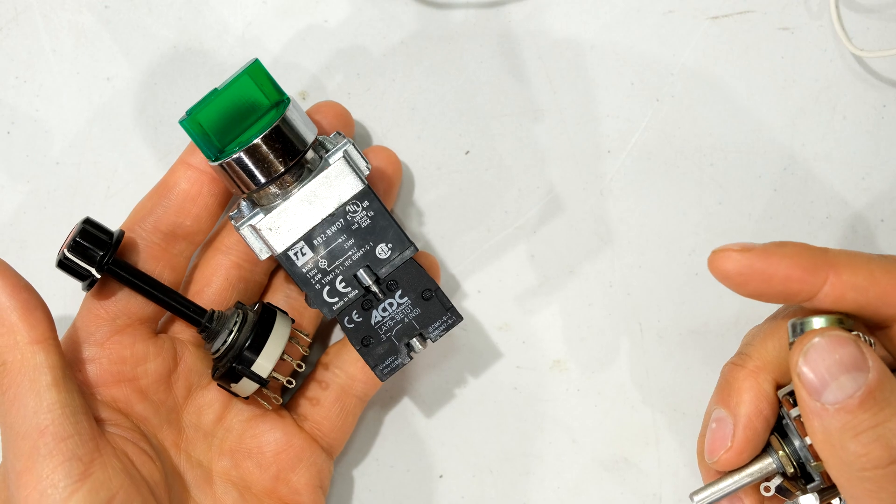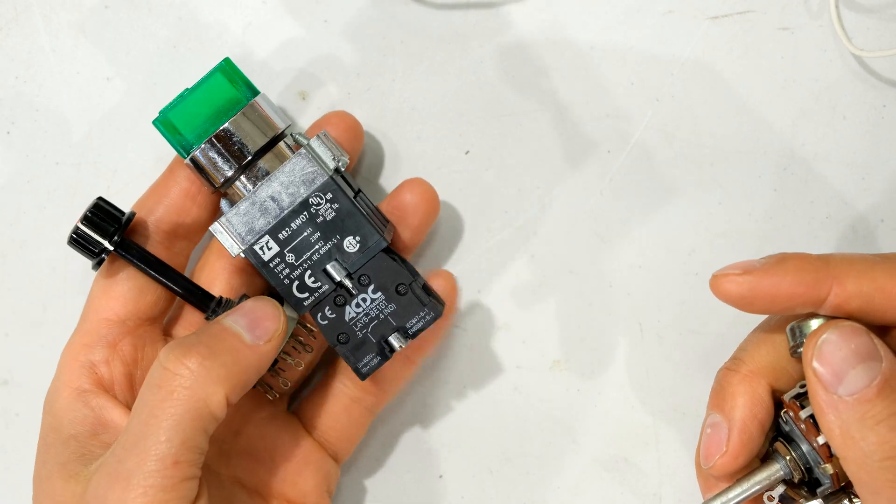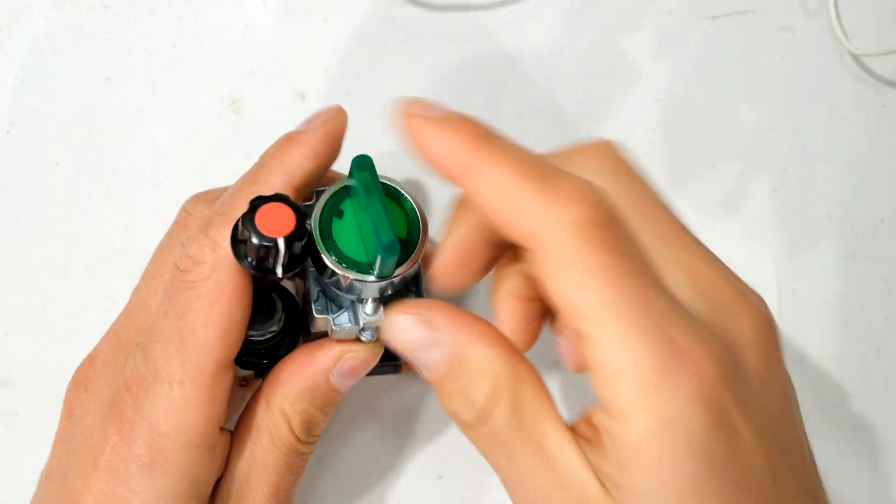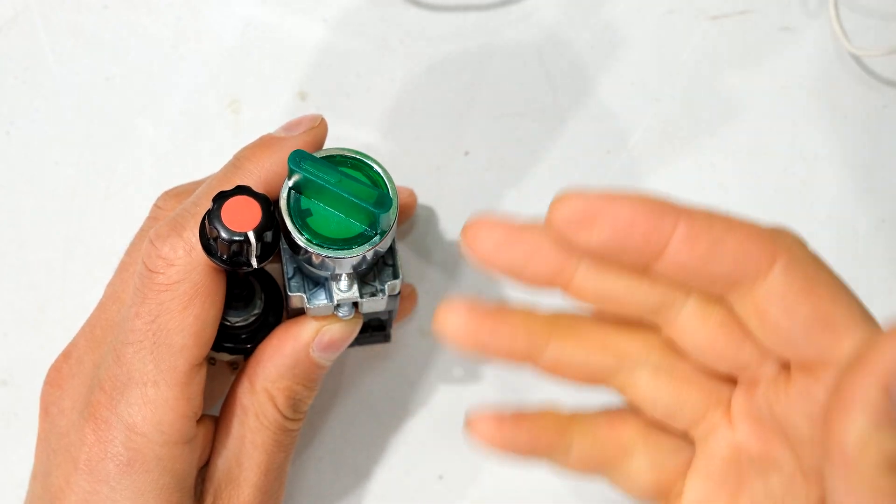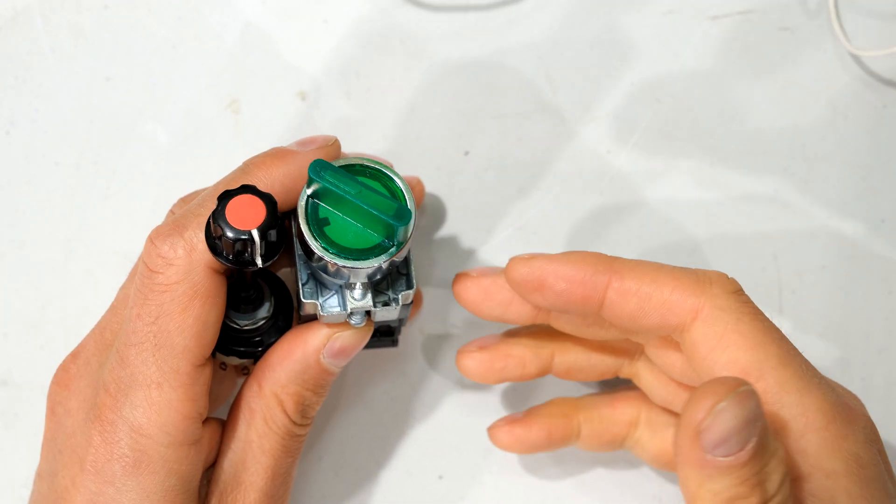Now rotary switches come in all sorts of packaging and styles. The main feature is that you are rotating it to switch the circuit on or off, or to select one of the outputs.